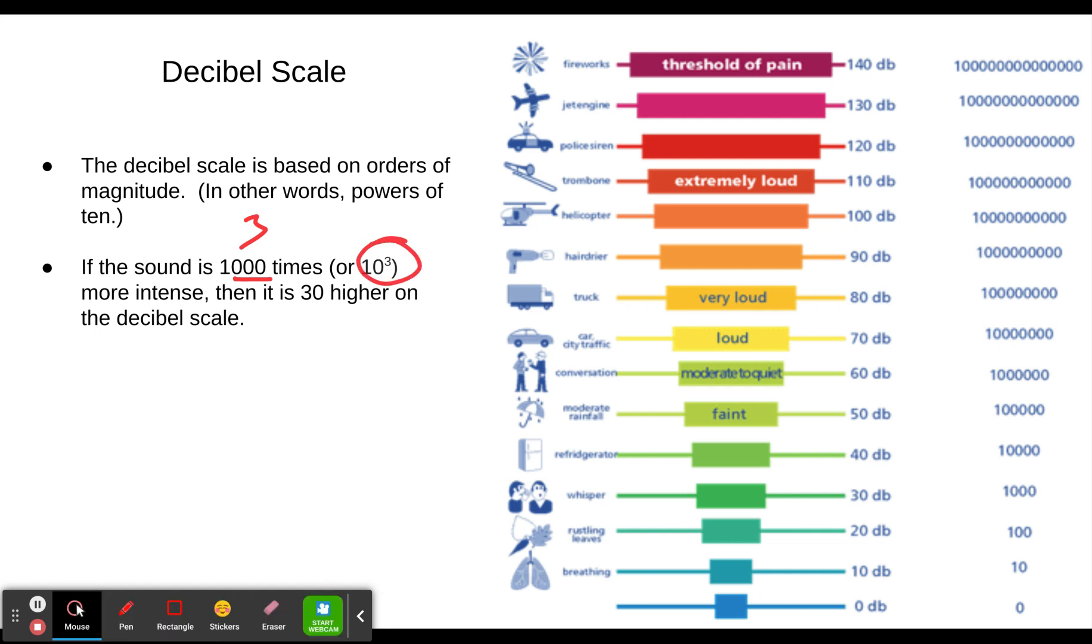And if it's three times, or 10 to the third times bigger, then it's 30 higher on the decibel scale. If we have something that's one ten thousandth the amount, that's 10 to the negative fourth. That means we're going to subtract 40. It's 40 lower on the decibel scale.